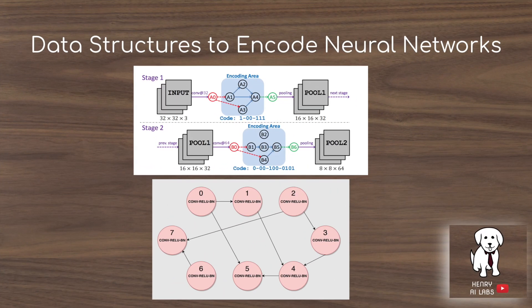In previous videos, we've seen different data structures used to encode neural networks that can then be searched over with neuroevolutionary algorithms to discover new neural architectures that perform better on different image classification, object detection, and language modeling tasks. In the Genetic CNN, neural networks are encoded using bit strings, where the ones and zeros represent connections from certain computational nodes to previous nodes in these microarchitectures that compose the network.